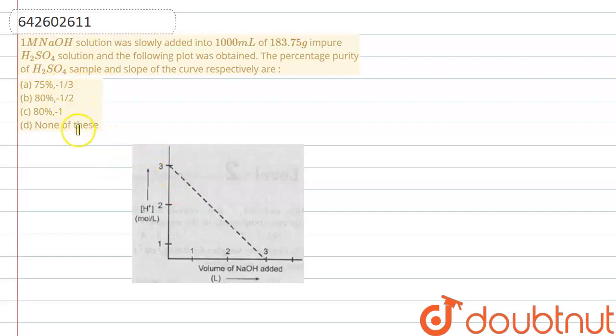Let me explain this question to you. Here, one molar NaOH solution was slowly added into 1000 ml of 183.75 gram impure sulfuric acid solution.